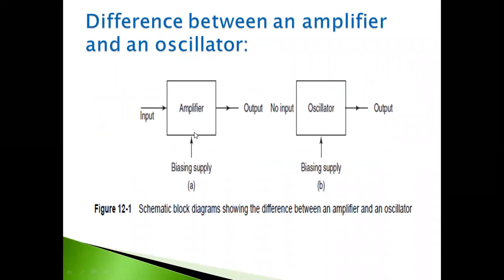Here I'm representing a block diagram. This is the amplifier block diagram — here you are giving input and here you are getting output. For the oscillator block diagram, there is no input. For an amplifier we give input; for an oscillator we do not give input. But it generates repetitive outputs — maybe sine wave, cosine wave, triangular wave — both sinusoidal and non-sinusoidal waveforms. Both amplifier and oscillator need a biasing supply, but we don't need any external input signal for the oscillator. That is the main difference between amplifier and oscillator.